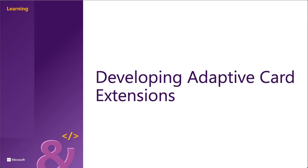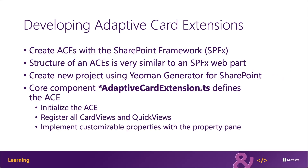Developers can create Adaptive Card Extensions using the same Yeoman Generator for SharePoint used to create web parts, extensions, and library components. An ACE is implemented using the adaptive card extension TS file, which exports three types of members: an interface defining the public properties and state for the component, constants defining unique IDs for each quick view used in the ACE, and a class that acts as the hub for the ACE.